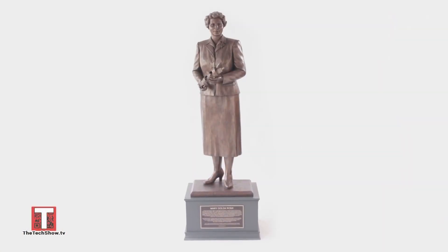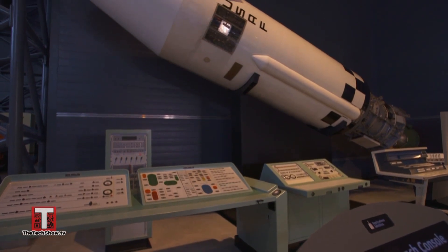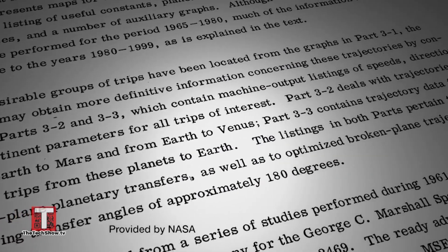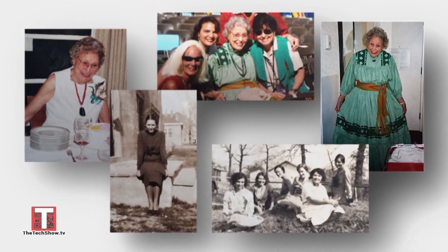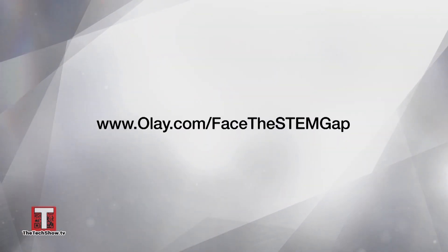This month Ole dedicated a statue to Mary Golda Ross. Mary Golda Ross, a citizen of the Cherokee Nation, was a brilliant engineer and trailblazer who made lasting contributions to the U.S. aerospace industry. Ross worked on some of the most important technologies of the 20th century, including the Agena rocket. She also contributed to NASA's Interplanetary Flight Handbook Vol. 3, which detailed spacecraft flight paths to Mars and Venus. The first known Native American woman engineer, Ross dedicated herself to encouraging young women and Native students to pursue STEM. With this statue, Ross's legacy will continue to inspire generations of young women. Learn more at ole.com/facethestemgap.